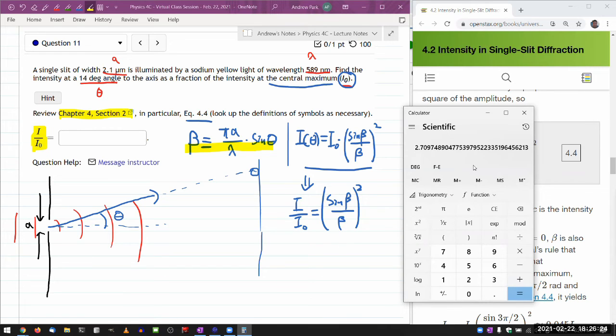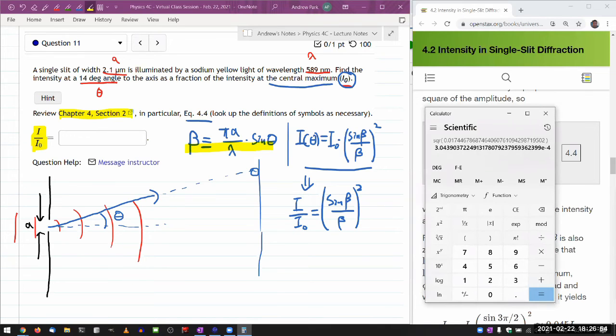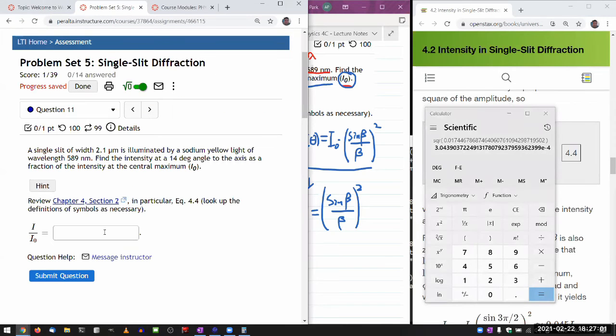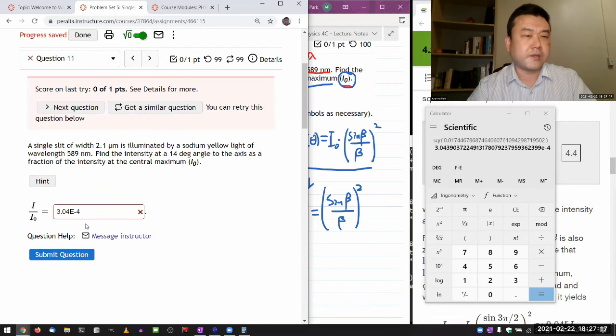And I'm just gonna do this calculation here now, sine of beta divided by beta squared. So this is already beta, so let me take sine of that, divided by beta, memory recall, equals, and then I need to square it. Okay, so that's my answer, hopefully that's all correct. So it's a three point, let me actually, I guess I can just plug it in here. So let me plug the numbers into the system and see if it says it's correct. I hope it says it's correct. And I can actually enter it this way, 3.04 E minus 4. This is the kind of calculator E notation. All numerical problems will accept this as being one of the ways it accepts the correct answer.